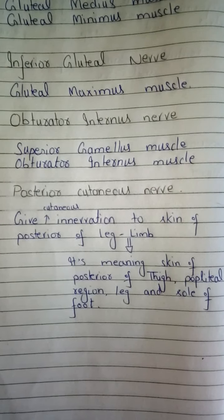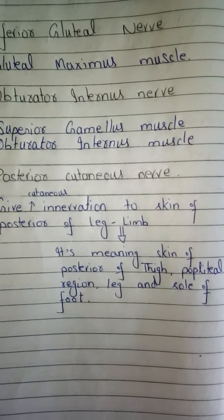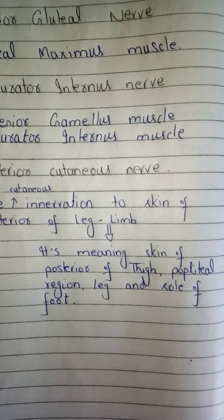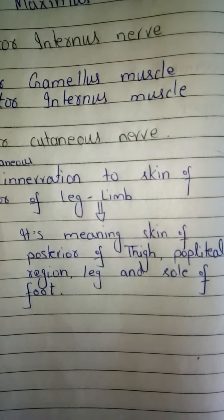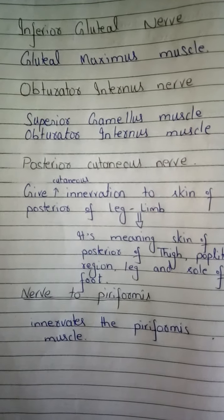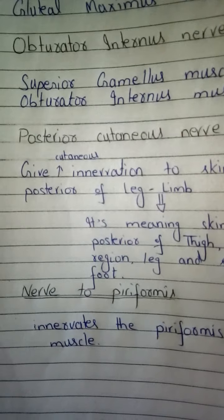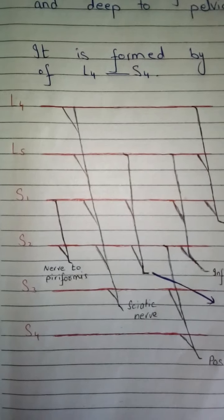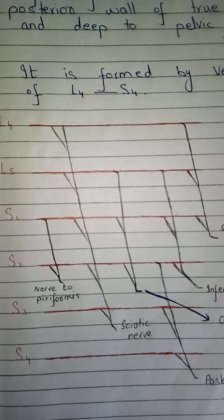The posterior cutaneous nerve gives cutaneous innervation to the skin of the posterior lower limb — specifically the posterior thigh, popliteal region, leg, and sole of foot. The nerve to piriformis, given by S1 and S2 fibers, innervates the piriformis muscle.